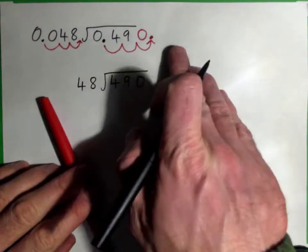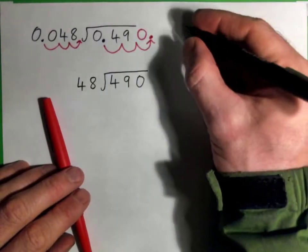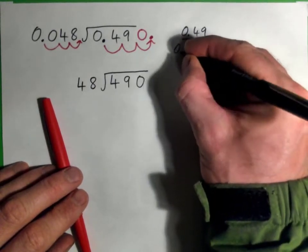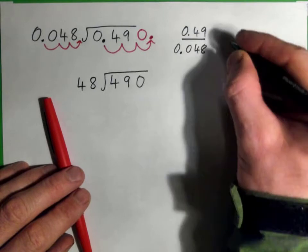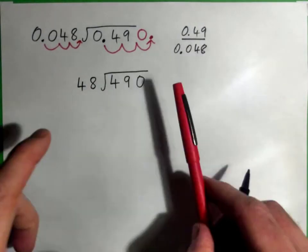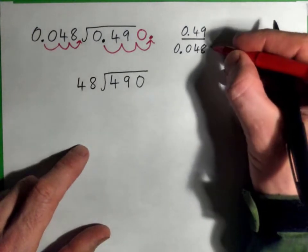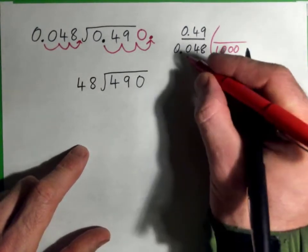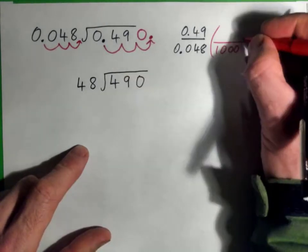Now the magic that we did there is we actually, what we started with was 0.49 divided by 0.048. And we wanted to get rid of the decimal in the divisor so that we could actually use some long division. And we needed to multiply this divisor by 1,000 so that this decimal point would move three spots to the right.